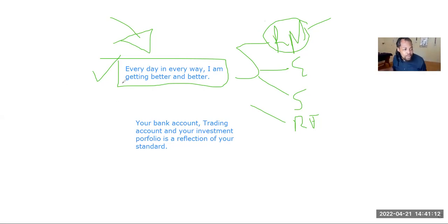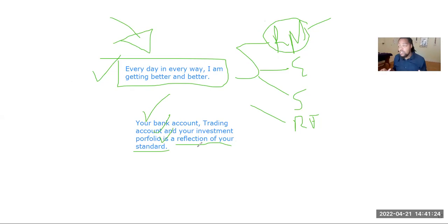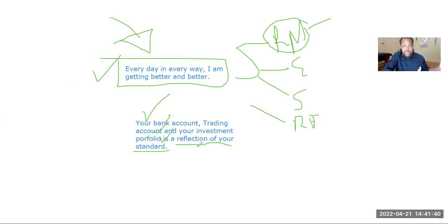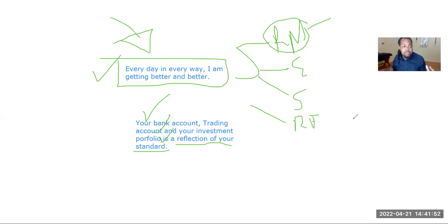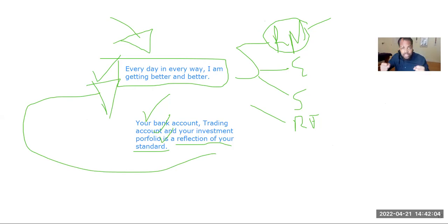Number two — before we get into the charts: your bank account, your trading account, your investing portfolio is a reflection of your standard. It is not a reflection of the markets going against you, your broker going against you, or liquidity rates — we know liquidity rates exist, that's how the business works. It is a pure reflection of your standard. Even my trading strategy is absolutely nothing without a mind that is ready to take this thing by the horns. It can be as simple as telling yourself every day in every way: 'I'm getting better and better as a trader.'